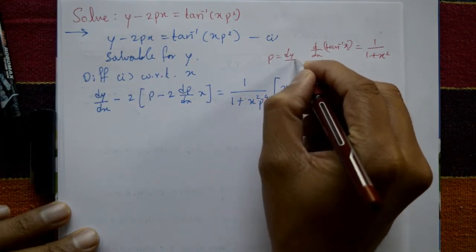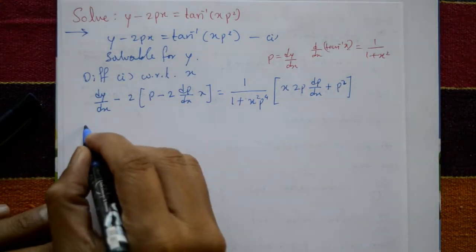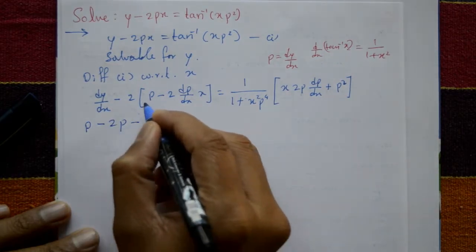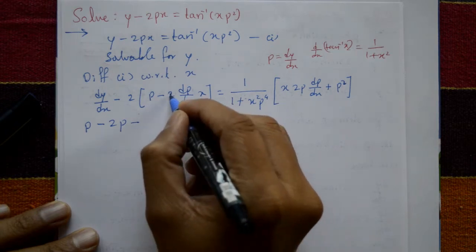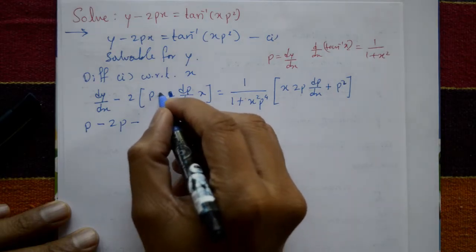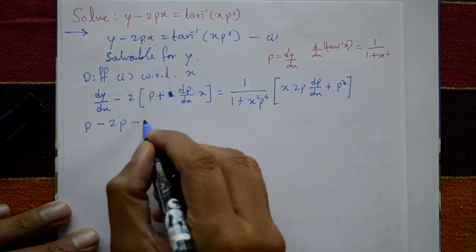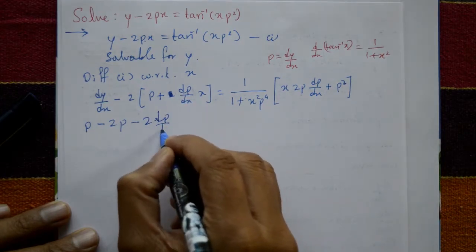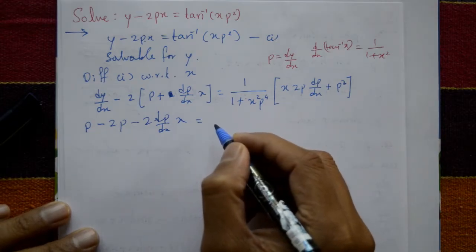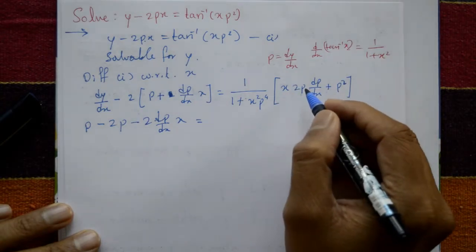Now, dy/dx equals p. Opening the expression: we have p minus 2p minus 2x dp/dx on the left side. Using the product rule result, the right-hand side expands with the terms from differentiating tan inverse of xp squared. We get minus 2 dp/dx into x on the left, equaling the right-hand side expression.